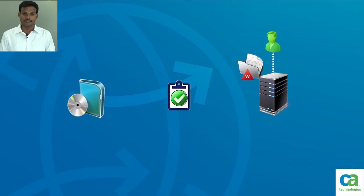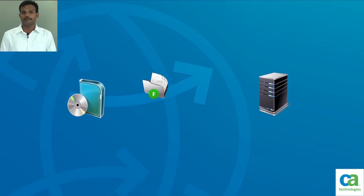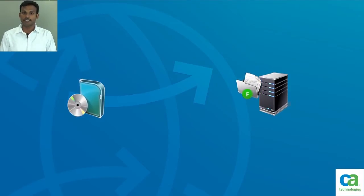By looking at the audit trails on the endpoint, we can make sure that the policy is actually doing what it's supposed to do. Once we have confirmed that the policy works perfectly in warning mode, we redeploy the policy in final mode. Here, the same behavior occurs but a preventive action also takes place, which means enforcing the policy onto the host machine.